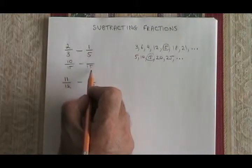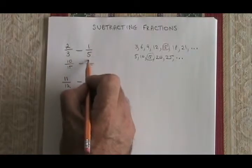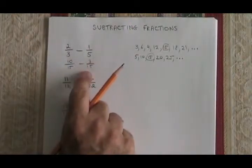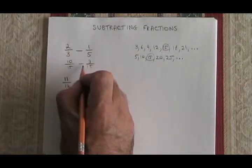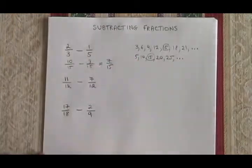5 is converted into 15 by multiplying it by 3, so the 1 has to be multiplied by a 3, and I get 3 over 15. Now that they are both over the common denominator of 15, I can say 10-15 minus 3-15 must be equal to 7-15, and I have my answer.